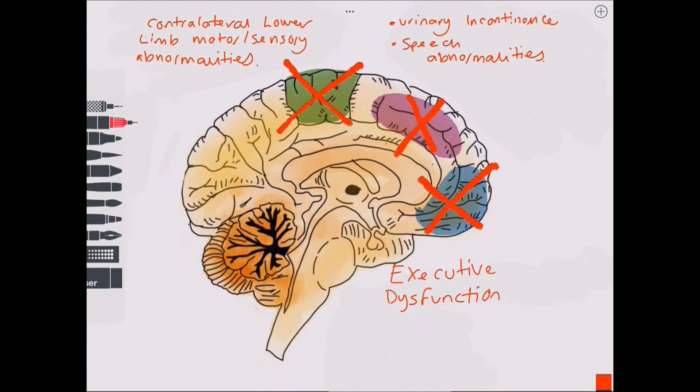So there you have it. The main symptoms of an anterior cerebral artery stroke are contralateral paralysis and paresthesia of the lower limb, urinary incontinence, executive dysfunction and speech abnormalities.